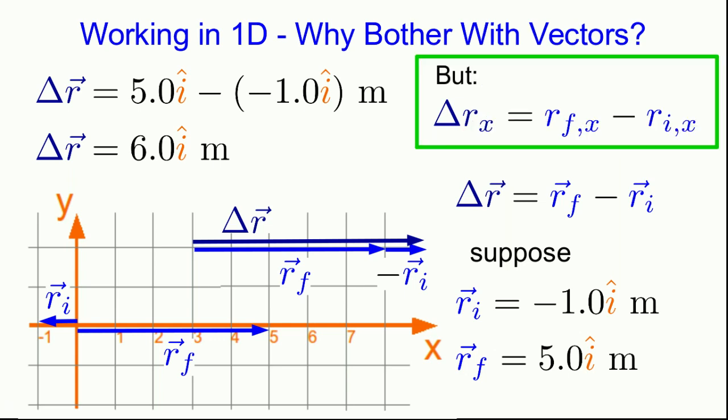What is true though is that the x component of delta r is the subtraction of the x components of rf and ri. And that's just what we've already seen as how we do vector addition and subtraction. So even though we're in one dimension, we should still pay attention to the difference between magnitudes of vectors and their components.